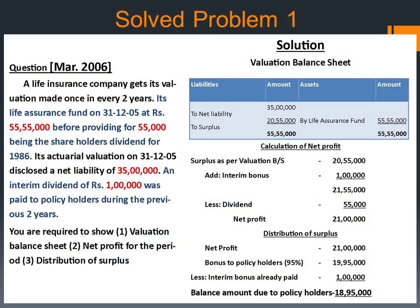Here is a solved problem. A life insurance company gets its valuation made once in every two years. Its life insurance fund on 31st December 2005 was Rs 55,55,000 before providing for Rs 55,000 being the shareholders' dividend. Its actuarial valuation on 31st December 2005 disclosed a net liability of Rs 35,00,000. An interim dividend of Rs 1,00,000 was paid to policy holders during the previous two years. You are required to show: one, valuation balance sheet; two, net profit for the period; three, distribution of surplus.